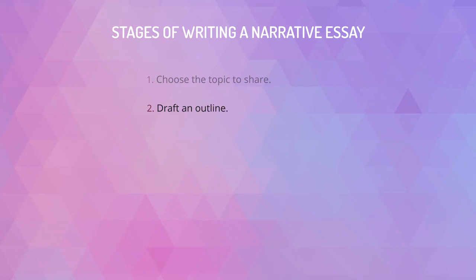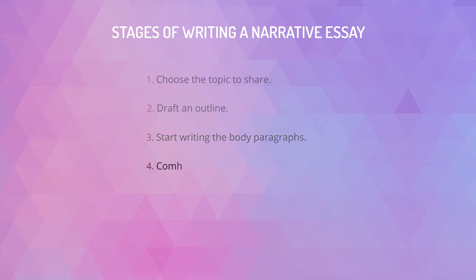Step 2: Draft an outline. Even if you simply retell the story in your essay, you should prepare an outline that precisely indicates the plot, the setting, the main characters, the culmination, and the ending of your narration. Step 3: Start writing the body paragraphs. Remember that a narrative essay is not the same as any other academic paper — you should use as many details as you can to provide complete characteristics for personalities, their actions, locations, feelings, and so on.